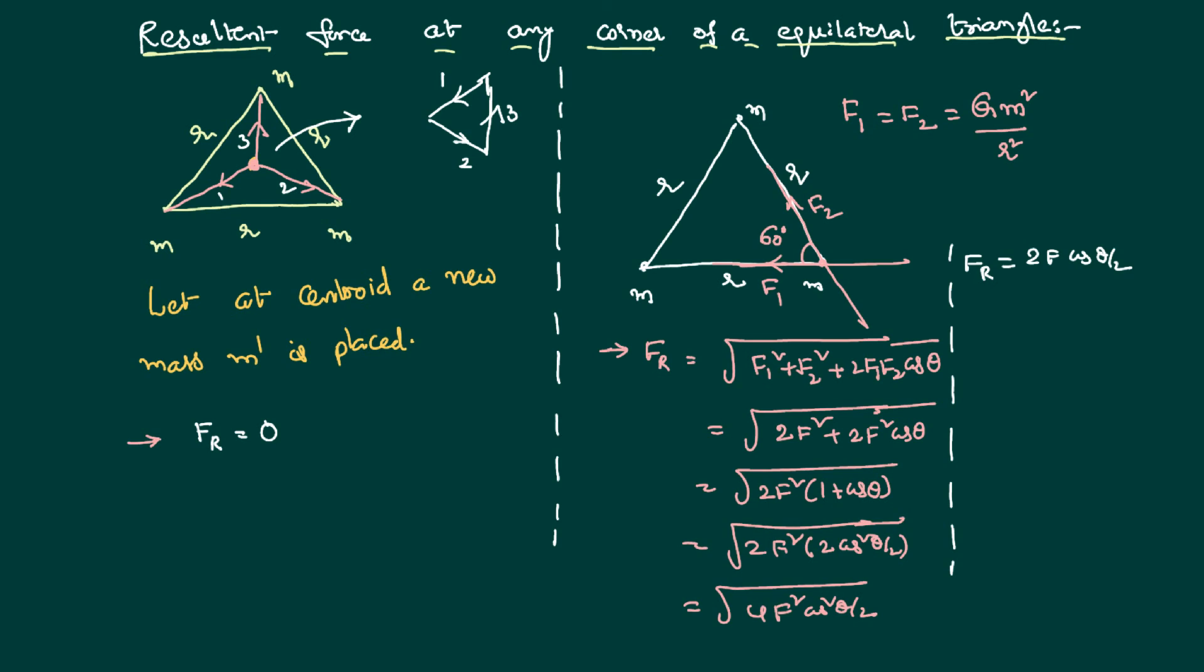Now, the value of the theta is nothing but equal to 60 degrees. So, the answer is going to be equal to 2F cos 60 by 2. We know 60 by 2 is nothing but equal to cos 30. We know that cos 30 is nothing but equal to sin 60 equal to root 3 by 2.